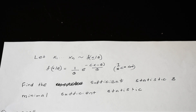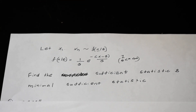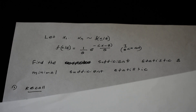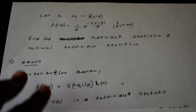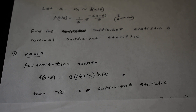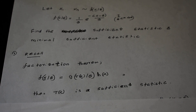First, we are going to find the sufficient statistic, and the main tool we are going to use is the Factorization Theorem. The Factorization Theorem tells you that our joint probability density function of all values of x can be rewritten as a product of two functions.